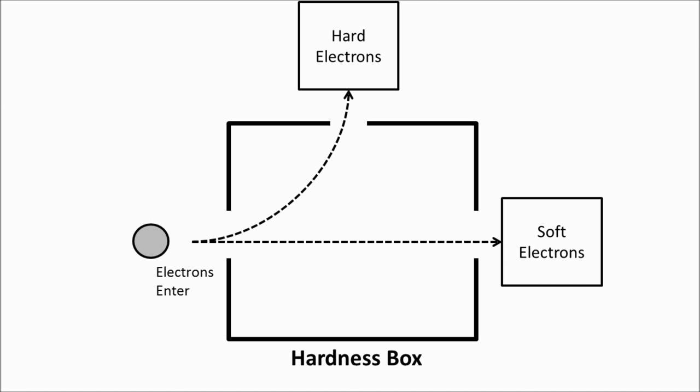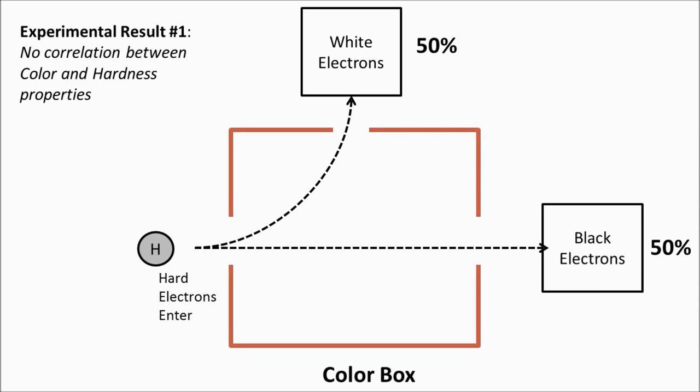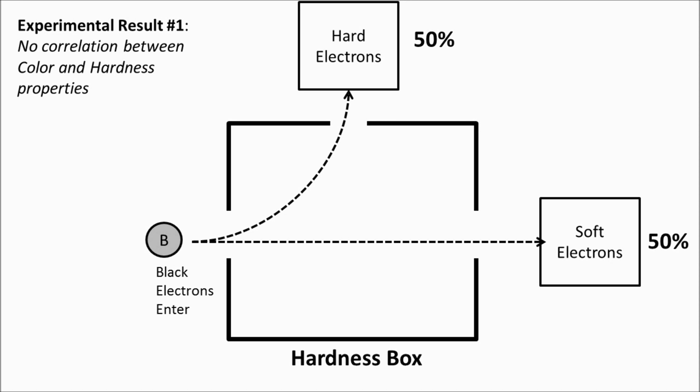If you measure soft electrons and send those soft electrons through another hardness box, they will still be soft — same with the hard electrons. So let's say I do an experiment to see if there's a correlation between color and hardness. I take a bunch of hard electrons, send them through a color box, and I find there's no correlation: 50% of the electrons will be white and 50% will be black. Likewise, taking black electrons through a hardness box gives 50% soft and 50% hard — absolutely no correlation.